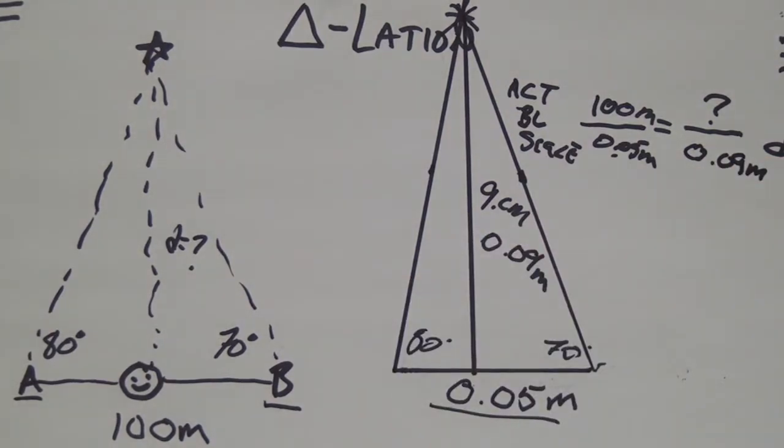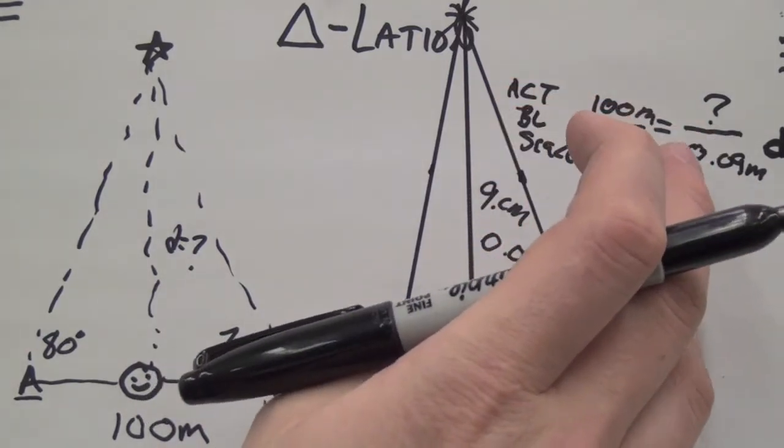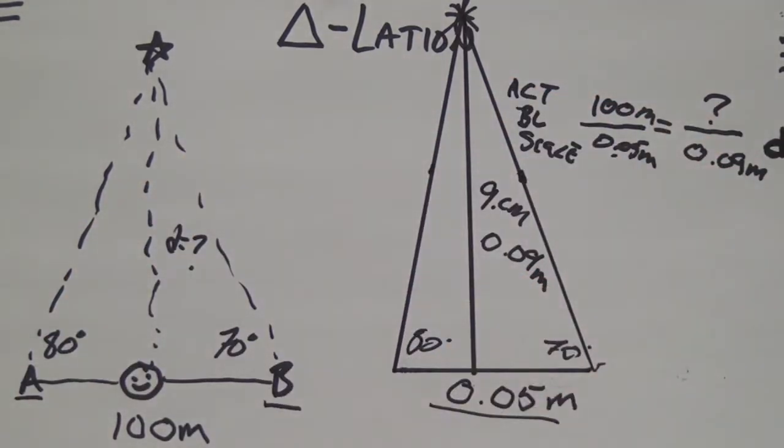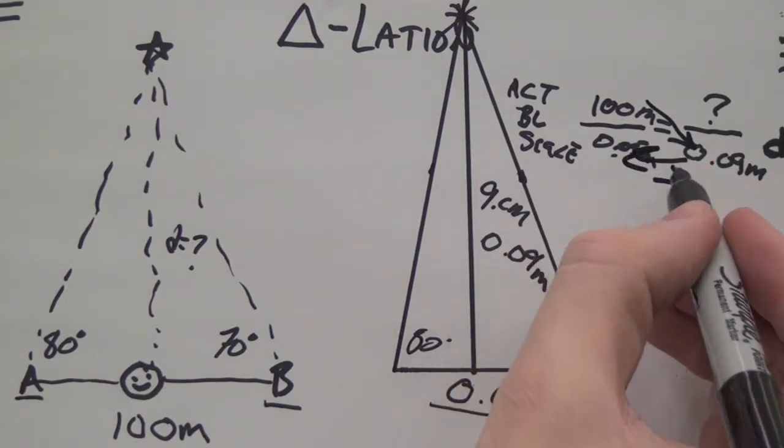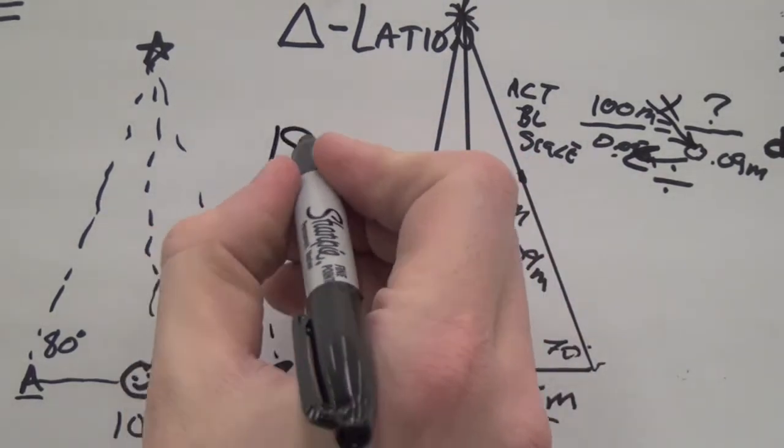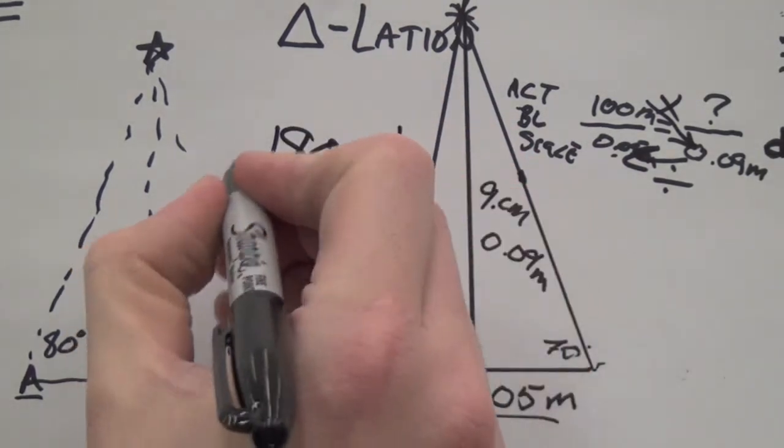That's the actual distance. And so, remember, we're looking for this baby, the distance. So, if 100 meters equals the baseline in real life, what would the distance be, given that on our scale drawing, 0.05 meters is the baseline and 0.09 is the distance, the measured distance. So, cross multiplication. 100 times 0.09 divided by whatever. However, I actually calculated ahead of time, it's actually 180 meters away.